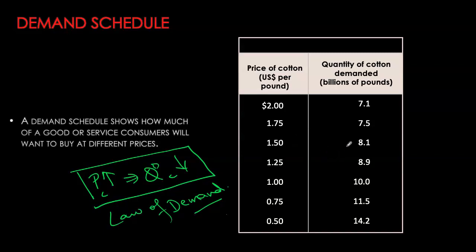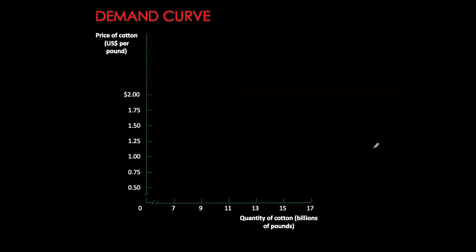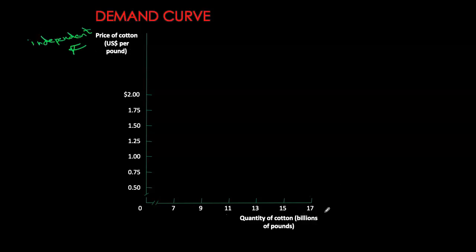Now I can plot the demand schedule on a two-dimensional graph, and that will give us our demand curve. In economics we always typically put price on the y-axis, even though price is your independent variable and quantity demanded is your dependent variable. Why am I pointing this out? Because in conventional mathematics we always put the dependent variable on the y-axis and the independent variable on the x-axis.